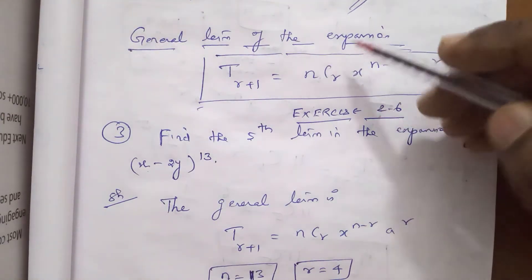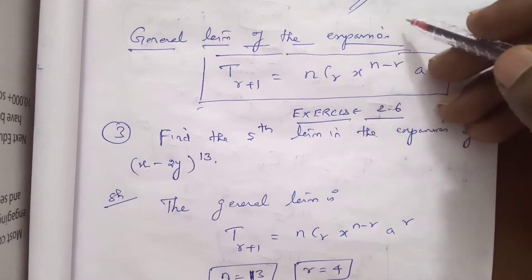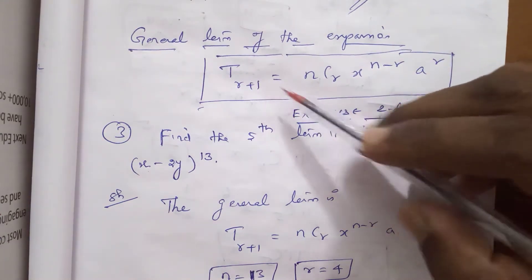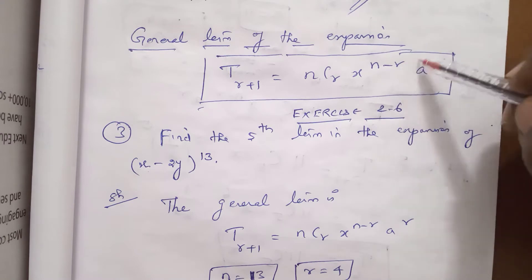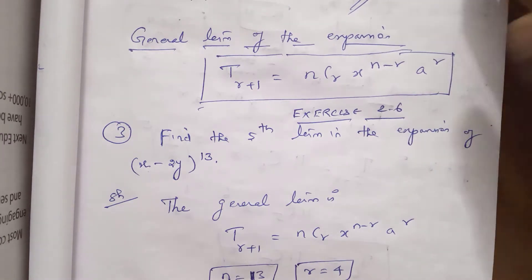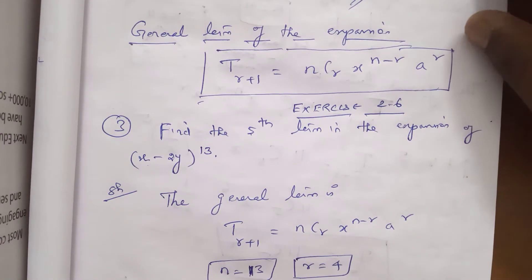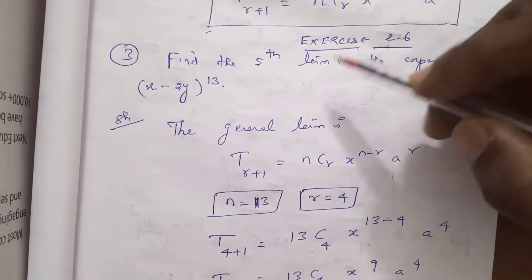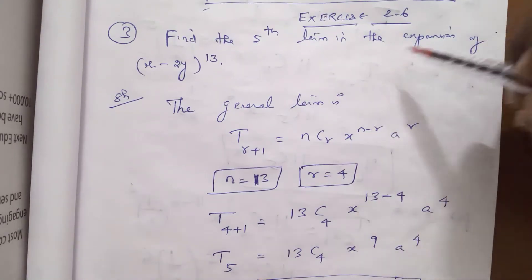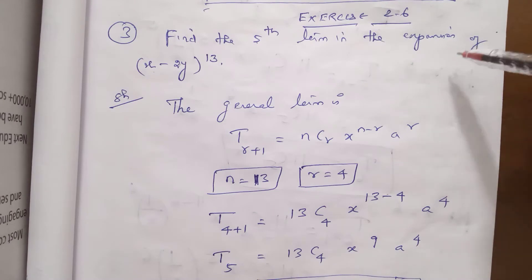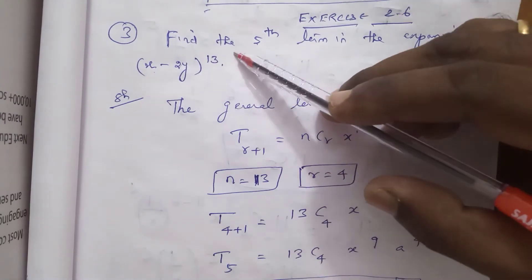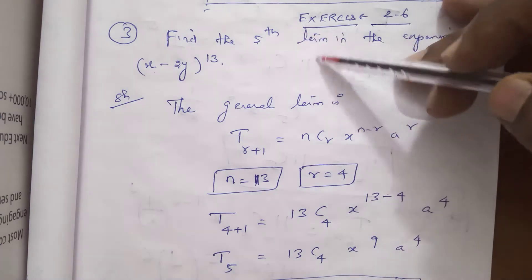The general term of the expansion formula is T(r+1) = nCr · x^(n-r) · a^r. Exercise 2.6, sum number 3: find the fifth term of the expansion of (x - 2y)^13.